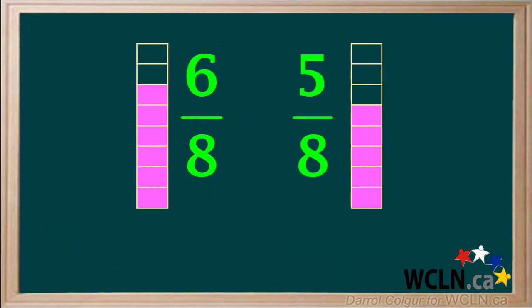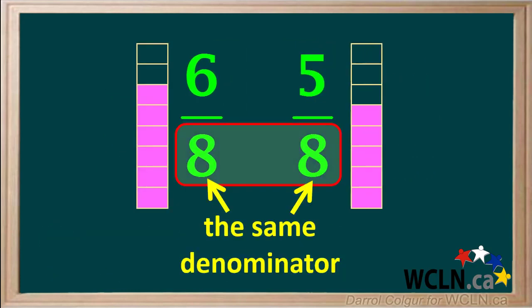Moving the fractions together, the fractions six-eighths and five-eighths have the same denominator. Fractions that have the same denominator are said to have a common denominator. These two fractions have the denominator eight in common.